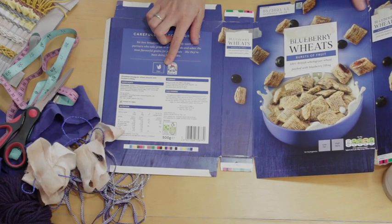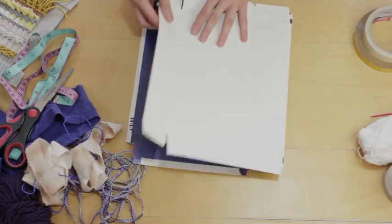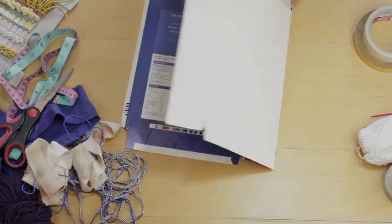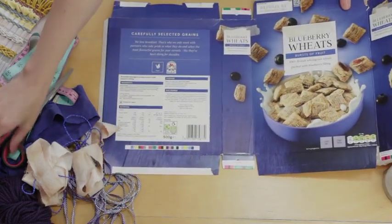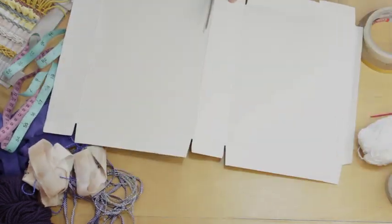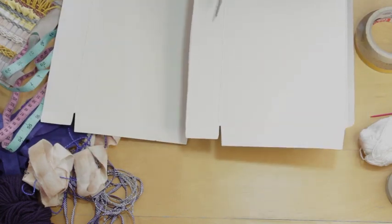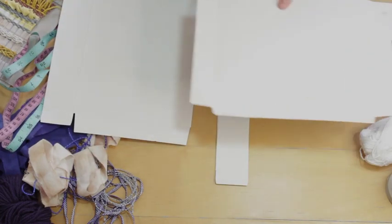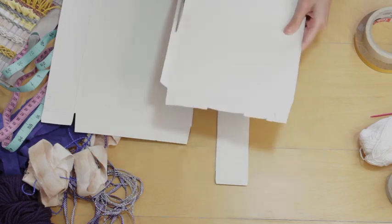When you make a loom from a cereal packet, the card can be a little bit thin, so what we're going to do is stick the two layers together just so it's a little bit thicker to work with. So I'm going to cut off these in-between pieces and stick these two bigger sides together.